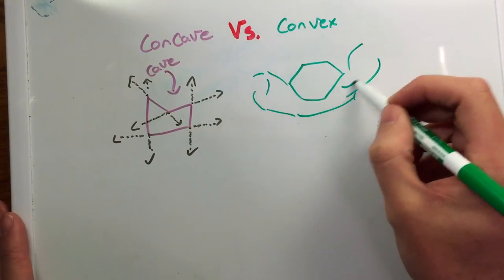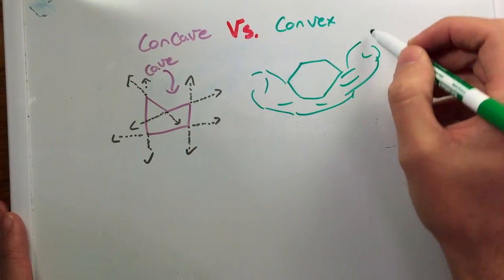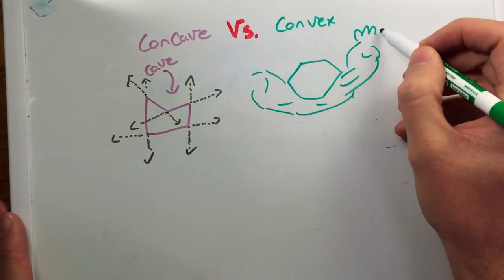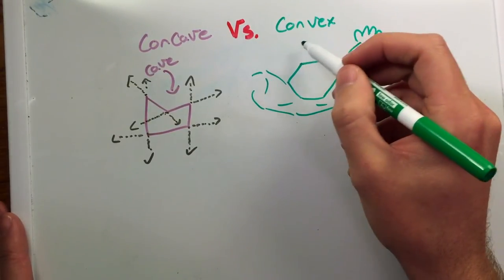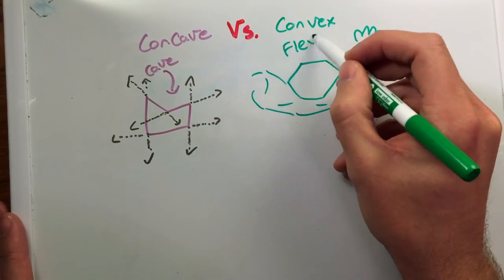Here we go, a little hand. One, two, that's three, four, five. There we go. He's flexing. And so convex is like you're flexing here, flexing.